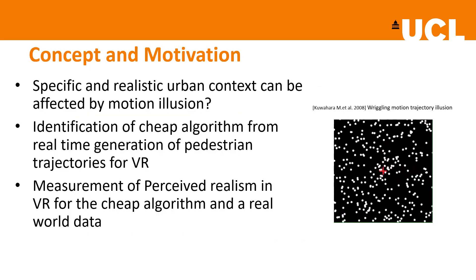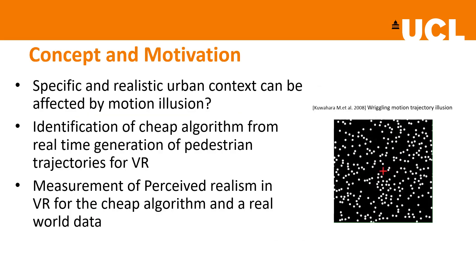We know that in general, trajectory realism is affected by the motion illusion effect, so we aim to understand if it can be perceived even in a constrained urban condition where pedestrians are moving in opposite directions. We address the challenge of understanding if computationally inexpensive algorithms can generate realistic trajectories in a scenario showing pedestrians following urban constraints such as a road crossing.